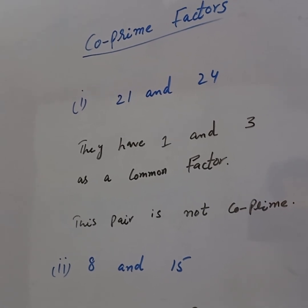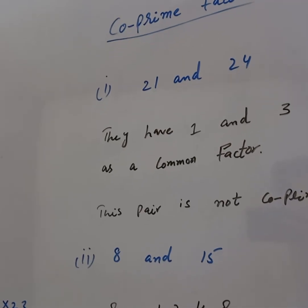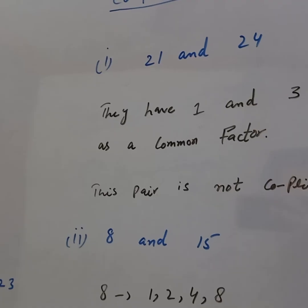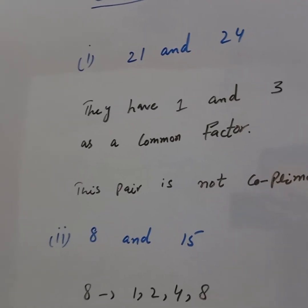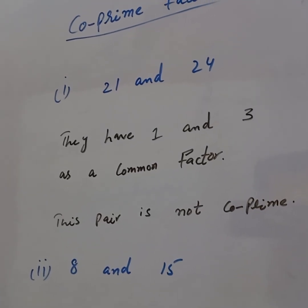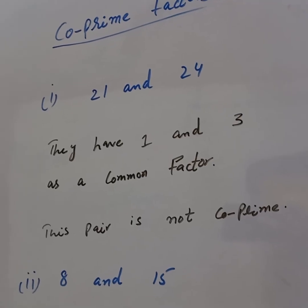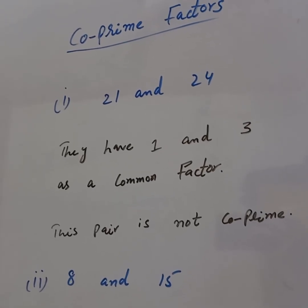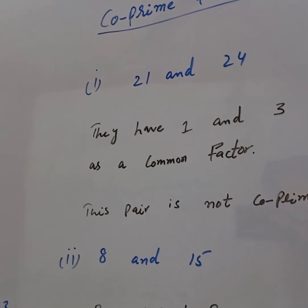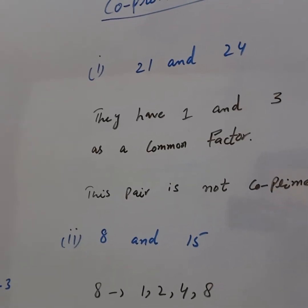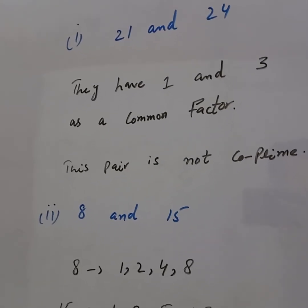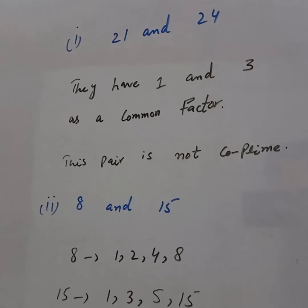The factors of 21 are 1, 3, and 7. The factors of 24 are 1, 2, 3, and 12. Since 3 is common to both 21 and 24, they share common factors 1 and 3. So this pair is not co-prime.